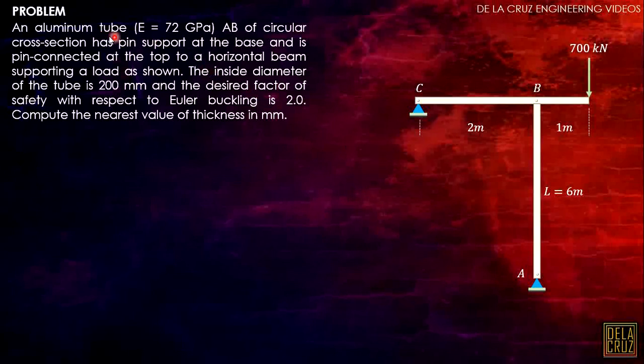Let's interpret this problem. We have this aluminum tube, which is the cross-section of member AB. As you can see, this is a column, a vertical member. My inside diameter here is 200 millimeters. And the thickness we're looking for is T. There will be thickness on the other side as well. Let's call the outside diameter capital D.